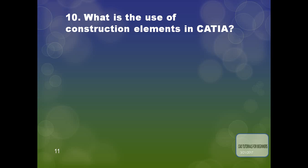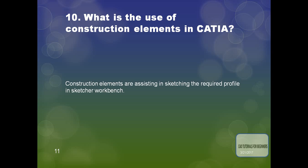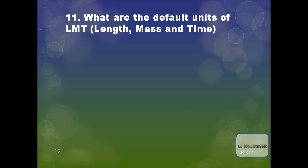The next question is: what is the use of construction elements in CATIA? Construction elements assist in sketching the required profile in the sketcher workbench. We can convert unwanted profiles into construction elements so that we can add material in part design.